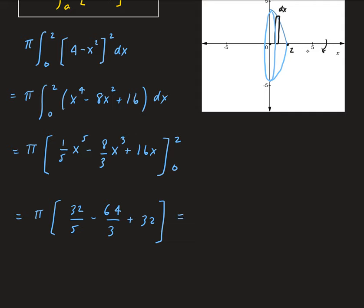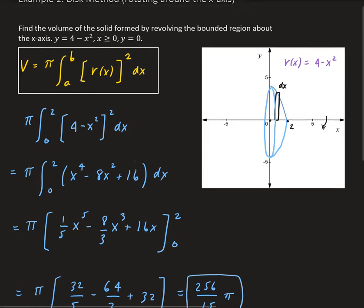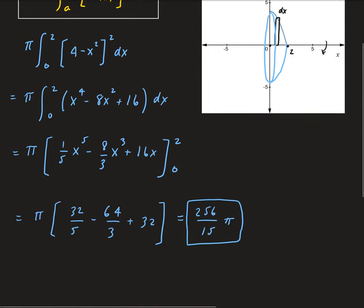So adding these up, this is going to give us 256 over 15 pi. So this is the volume for our region that's being rotated around the x-axis. If this was some application problem, then this would be in terms of units cubed.